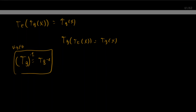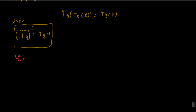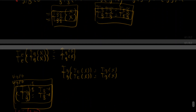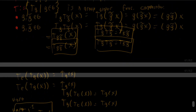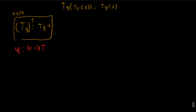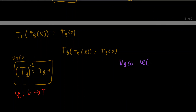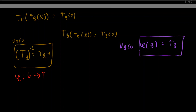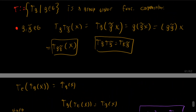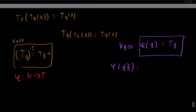Now we need to show this group is isomorphic to our original group G. We construct the function φ: G → {T_g} by mapping g ↦ T_g. We need to show this is operation-preserving and bijective. Operation-preserving is straightforward: φ(g·g̃) = T_{g·g̃} = T_g ∘ T_{g̃} = φ(g) ∘ φ(g̃).